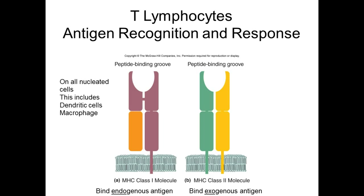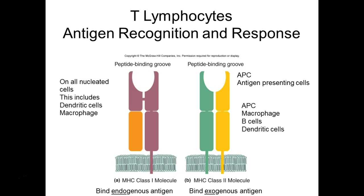MHC class 2 is specifically for antigen-presenting cells, handling exogenous antigens — things that are outside of our cells. We need a way of detecting and responding to things outside our cells, and MHC class 2 allows us to do that. There's a special grouping of cells with this marker, collectively referred to as antigen-presenting cells, or APCs.